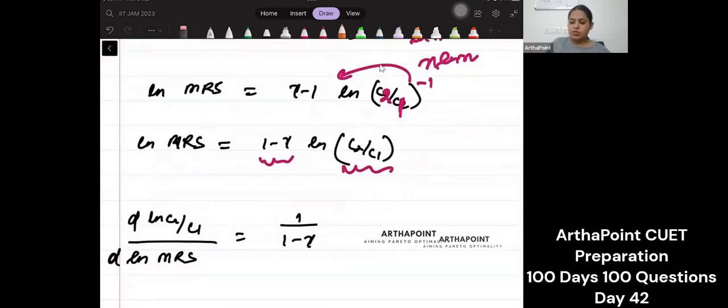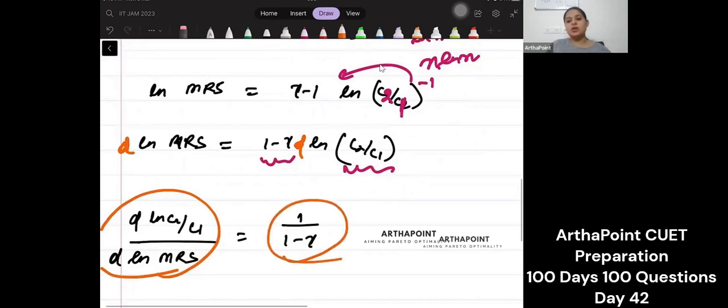Now just take D on both sides. So D of this will be D of this. So D of C2 by C1 by D of MRS will be 1 minus gamma.